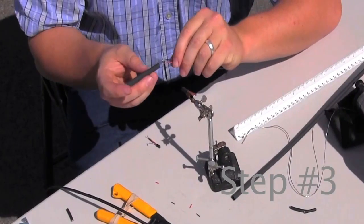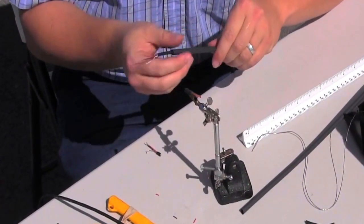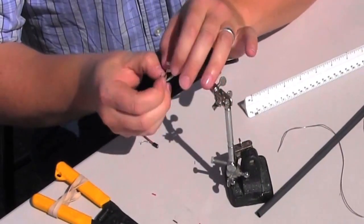Step 3: slide the outer heat shrink onto one of the cables to the side of the splice. Be sure to slide it far enough onto the cable away from the joint so the heat gun will not heat it up before you're finished with the next steps.